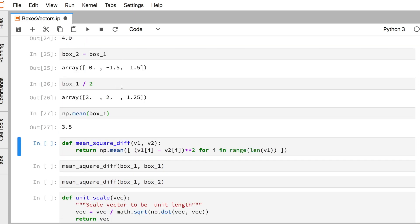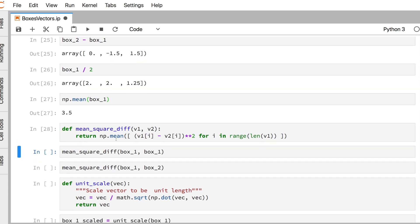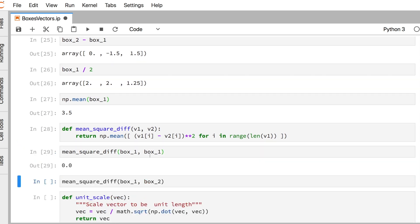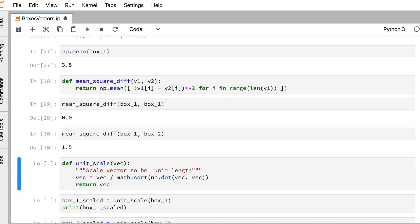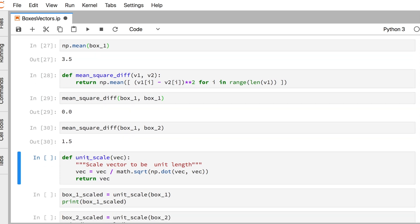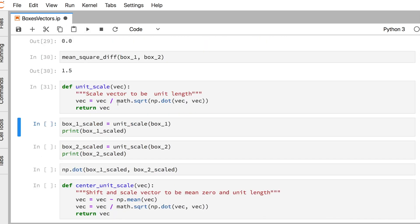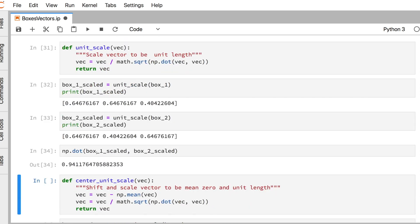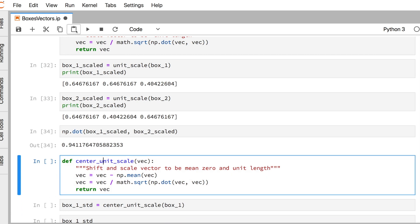We can define a function that computes the mean square difference. Box 1 is very much like itself. And box 1 and box 2 have a mean square difference of 1.5 in each entry. We can write a utility code that scales the data to be unit magnitude in the Euclidean norm. And we can then compute the dot product. So now that these two vectors are scaled, the dot product gives the cosine of the angle between them. So if they were parallel, we'd get a 1. And if they were orthogonal, we'd get a 0. And if they're pointing anti-directions, we'd get a negative 1. A very useful summary of how related those two vectors are.